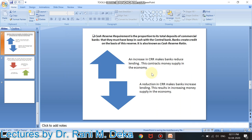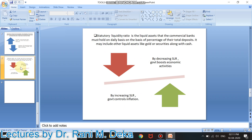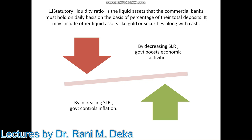The next liquidity ratio is called the Statutory Liquidity Ratio. It refers to the liquid assets that every commercial bank has to keep on a daily basis, as a percentage of their total deposits, as directed by the central bank. It may include other liquid assets such as gold and securities.